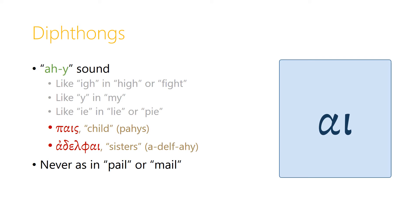Then we have several diphthongs in Greek. One of these is the combination alpha-iota. This is pronounced 'ai', like in the English words 'hi', 'fight', 'my', 'lie', or 'pi'. The word 'pais' means 'child', and the word 'adelphai' ends with this same sound, meaning 'sisters'. But alpha-iota together never sound like the 'a' in 'pale' or 'male' — it always makes the 'i' sound.